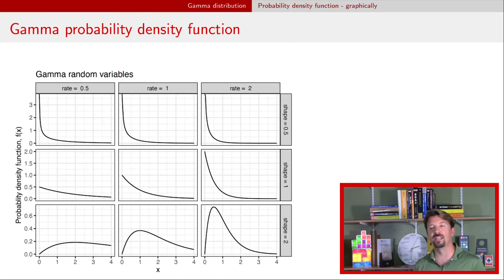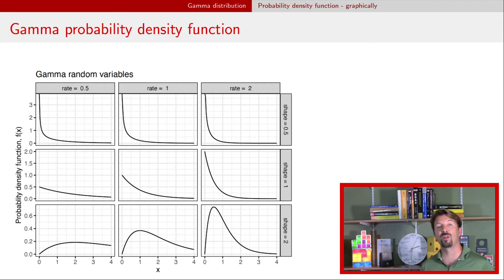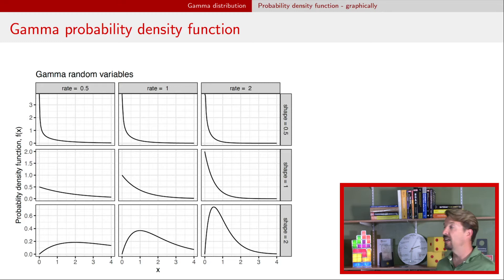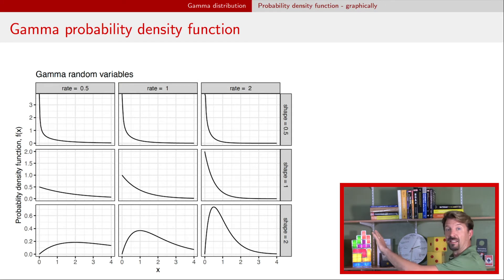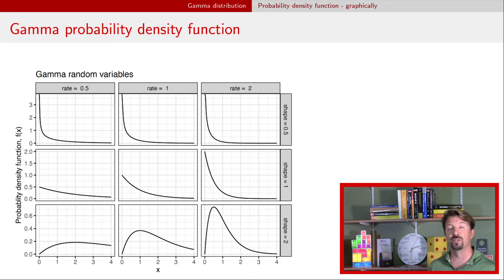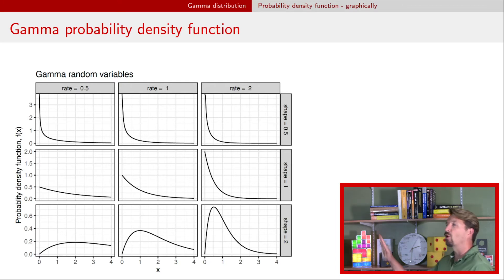Let's take a look at some PDFs. Depending on the parameter values, they have quite different looks. If the shape parameter is one or less, you get a PDF that starts at its maximum at zero and just decays — very similar to the exponential distribution. That shape parameter determines how quickly it decays; the smaller it is, the faster the decay.